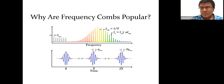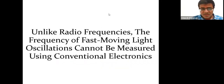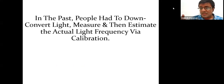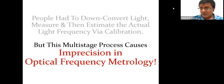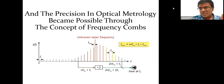So why were these combs popular? Unlike radio frequencies, the frequency of fast-moving light oscillations cannot be measured using conventional electronics. People had to down-convert light and then estimate via calibration. You have very fast moving oscillations, you down-convert them somehow, and then measure via calibration. But this multi-stage process causes imprecision in frequency, and therefore there is imprecision in optical frequency metrology. Precision itself became the central theme in optical metrology after the introduction of the frequency comb concept.